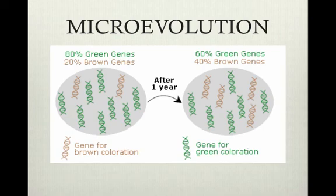Microevolution describes changes in the frequencies of alleles of genes in a population. For example, a wildflower population with some flowers that have genes for red flowers and some with genes for white flowers. If the percentage of red flowers changes over several generations, then the population evolves. This is a type of microevolution.